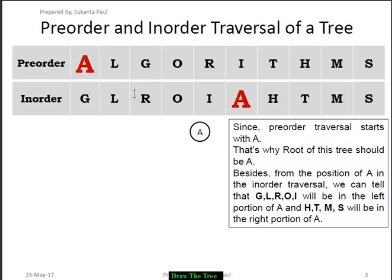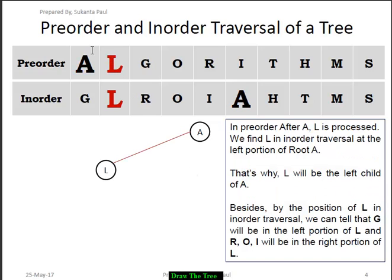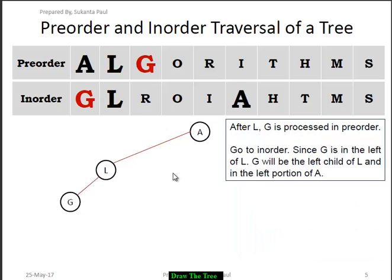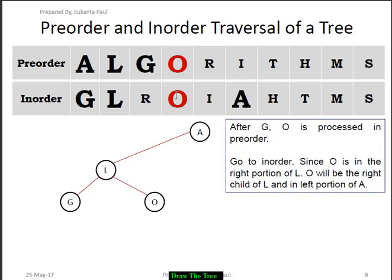We proceed to the next node in pre-order, which is G. We see that G is in the left portion of A, so G will be the left child of A. We then proceed to the next node, which is L. We see that G is in the left portion of L. Then we proceed to the next node in pre-order, which is O. In in-order, O is present here.